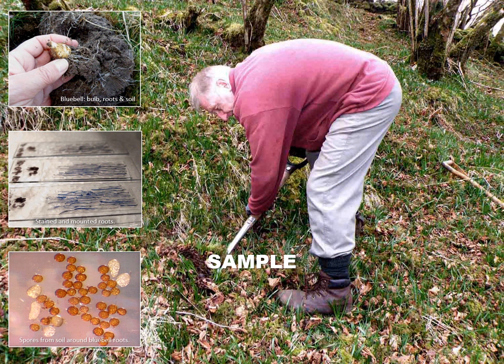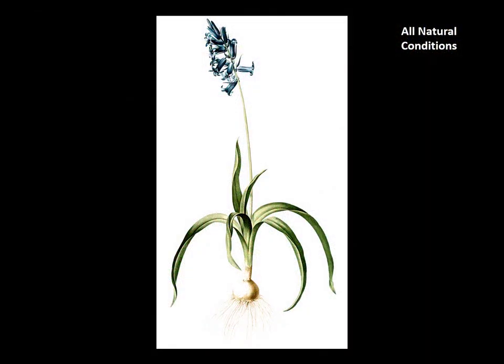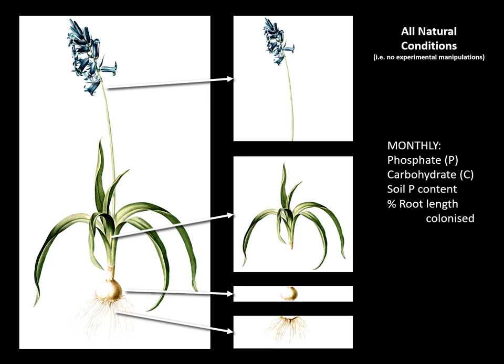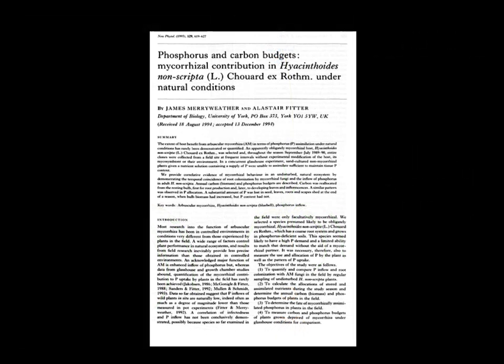I first took samples for detailed analysis, carefully lifting the bluebells aside, removing some roots and replacing the plants. I also sampled soil from around the roots for the extraction of spores. Both samplings provided plenty of data but unfortunately, in practice, the two did not correlate. At the same time, individual field-collected bluebells were divided into four parts to ascertain phosphate inflows and allocation of phosphorus and carbohydrates to the various bluebell tissues, plus root colonisation by mycorrhizal fungi throughout the seasons of a single year. That experiment provided the first evidence of mycorrhizal behaviour in an undisturbed natural ecosystem, by demonstrating the temporal coincidence of root colonisation by mycorrhizal fungi and the inflow of phosphorus in adult bluebells.